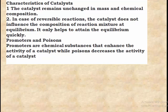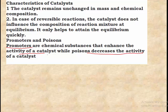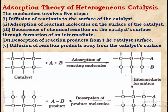Key characteristics of a catalyst include that its mass and chemical composition remain unchanged, and for reversible reactions, the catalyst does not influence the equilibrium composition of the reaction mixture. Promoters are chemical substances that enhance the activity of the catalyst, while poisons are substances that decrease catalyst activity.